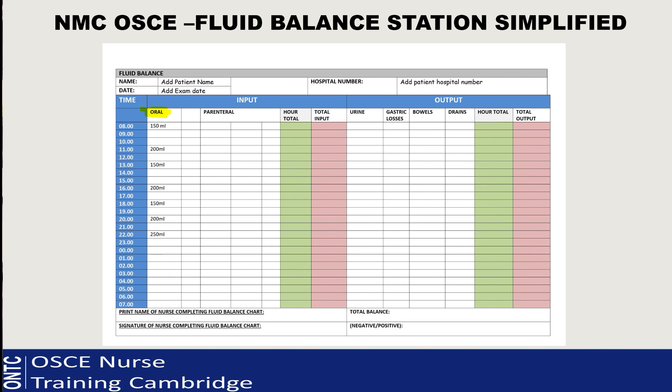Next we're going to do the oral intake. You can see the column for oral highlighted in yellow on screen - that's the column. Go to the exact times from your summary sheet and transfer all the information correctly onto this column. So if your patient had 150ml at 8 o'clock, 100ml at 9 o'clock, whatever it is, just put it into the right boxes. You don't have to write tea, coffee, milk - just put the actual amount.